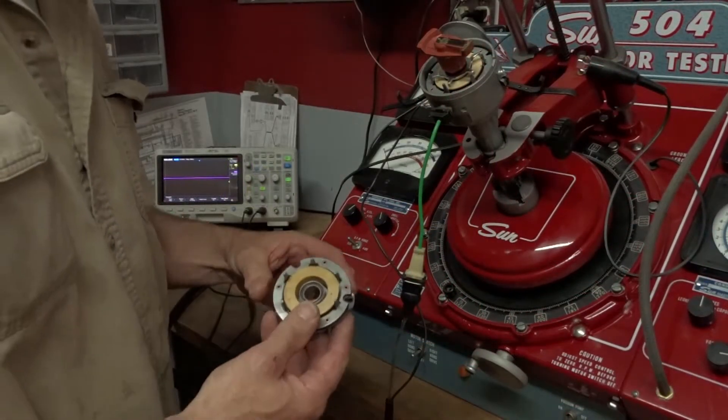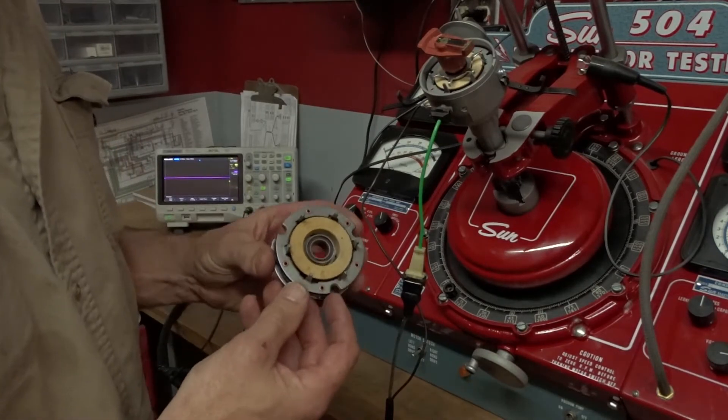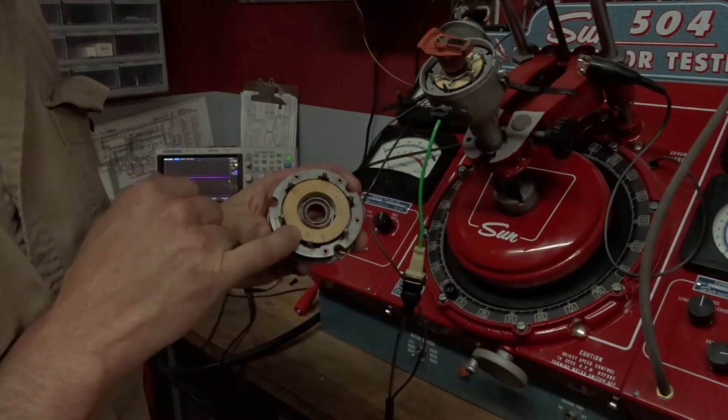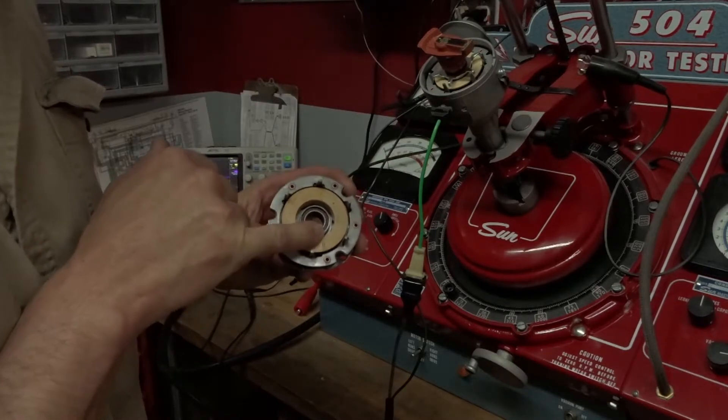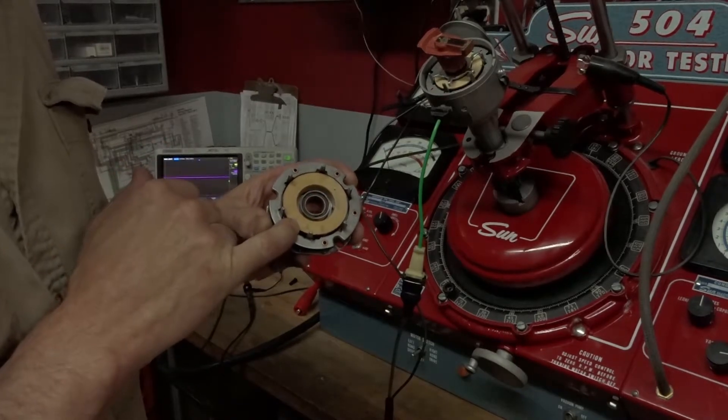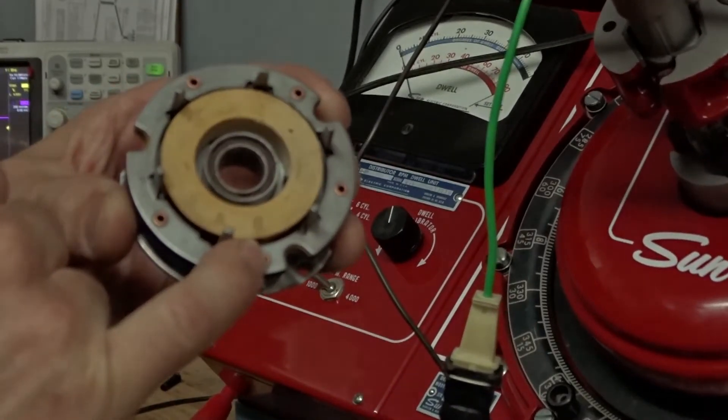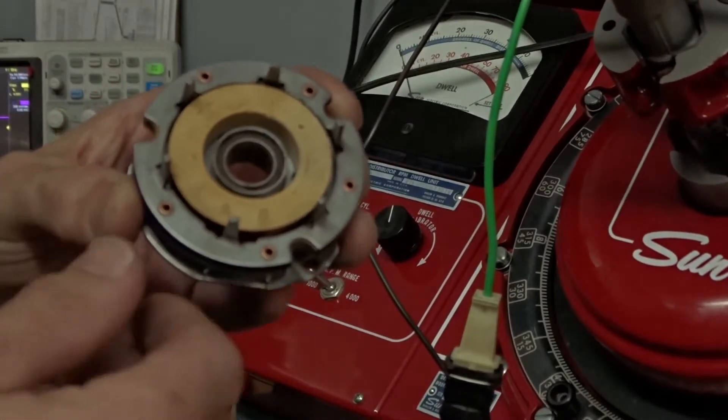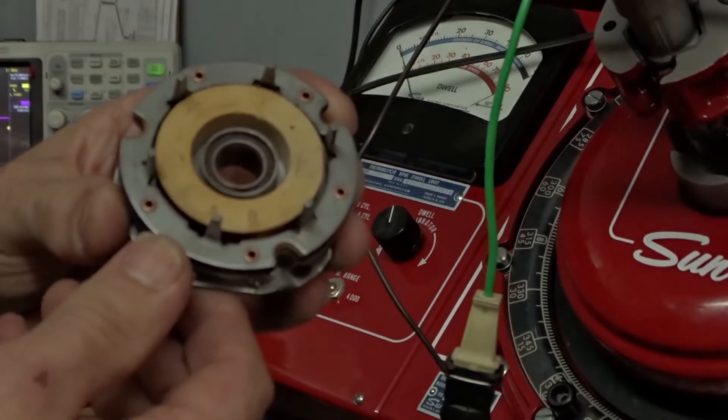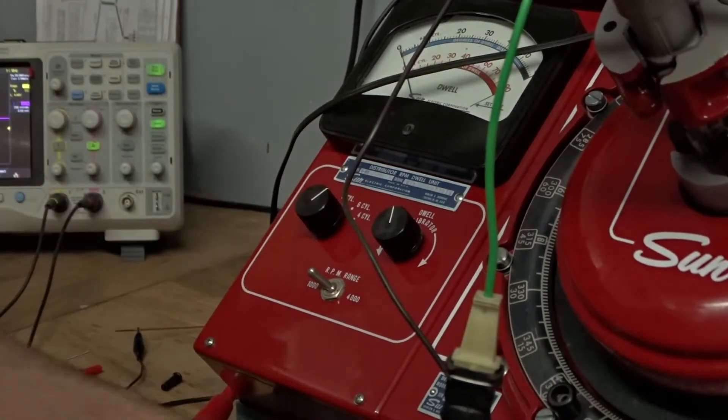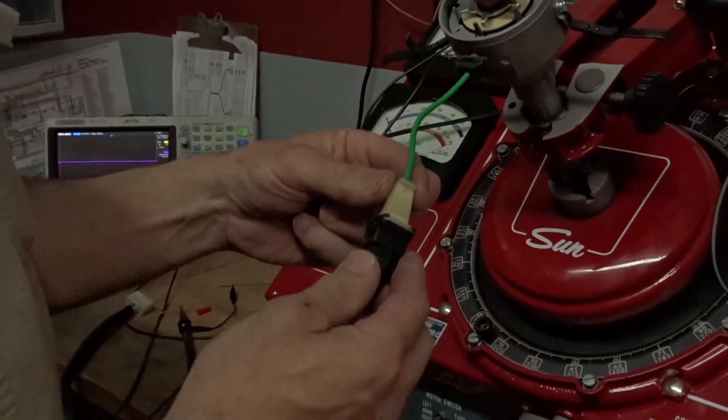Okay, so we know that the polarity comes from the impulse generator. Impulse generator is marked A and marked B. Terminal A is always positive. Terminal B is always negative. That is built into the design of the impulse generator. Where Bosch made the change was in this plug.